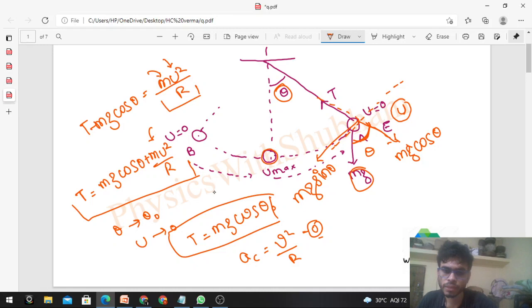And centripetal acceleration minimum is zero. And when it is at the mean position, then you can see the pendulum is vertical. The forces are vertically upward tension and downward weight. So centripetal acceleration is maximum because u maximum is maximum. Centripetal acceleration is u² upon r. So if u increases, then centripetal acceleration increases. So what does that mean? When you are at mean position, then this is the centripetal acceleration maximum.